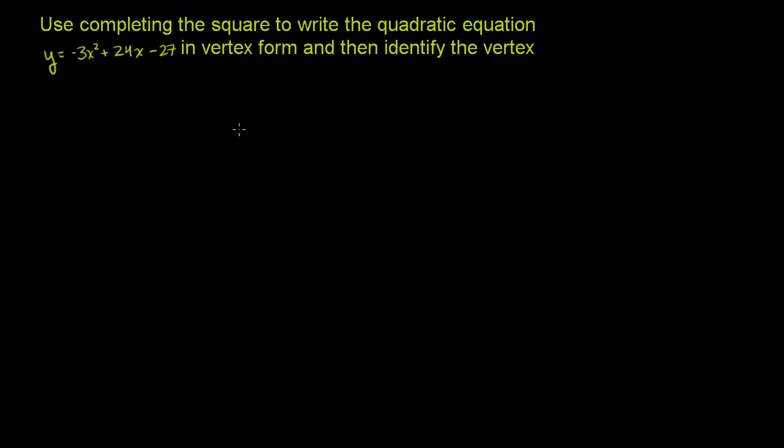We'll see what vertex form is, but we essentially complete the square and generate the function, or we rewrite, we algebraically manipulate it, so it's in the form y equals a times (x minus b) squared plus c. We want to get the equation into this form right here. This is vertex form.